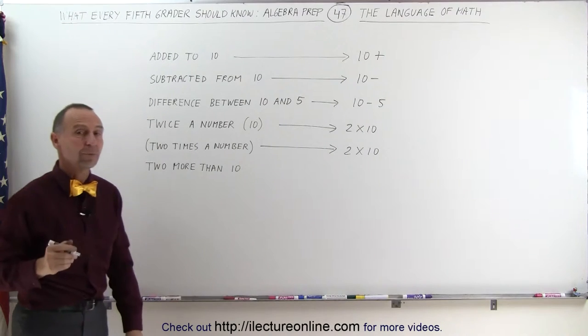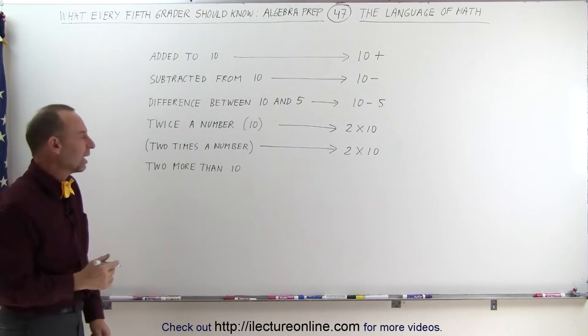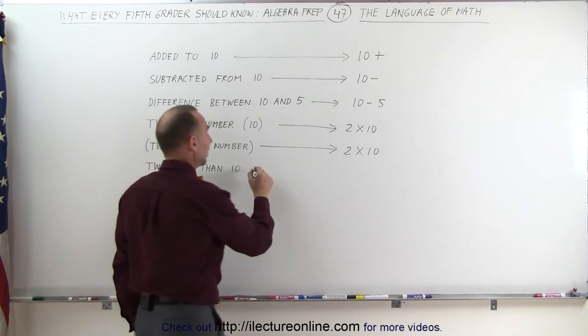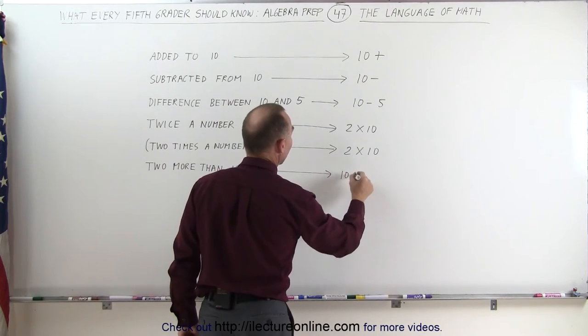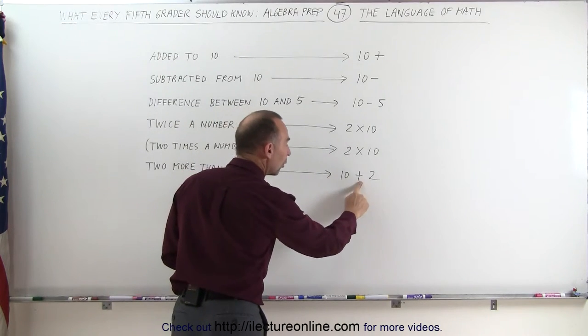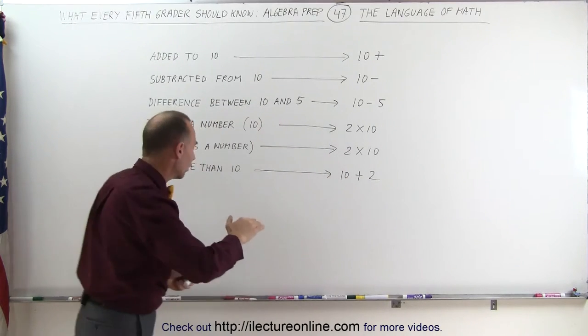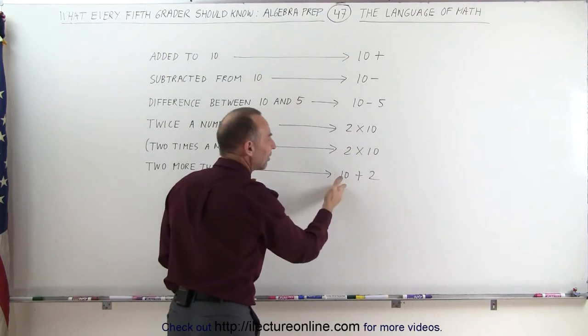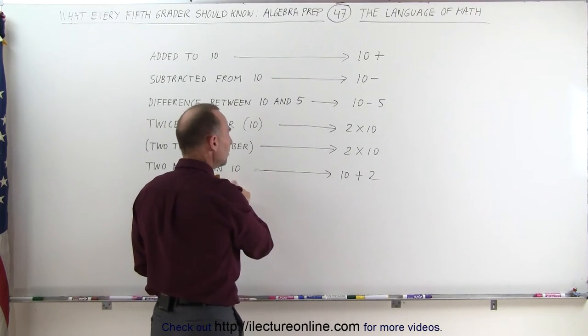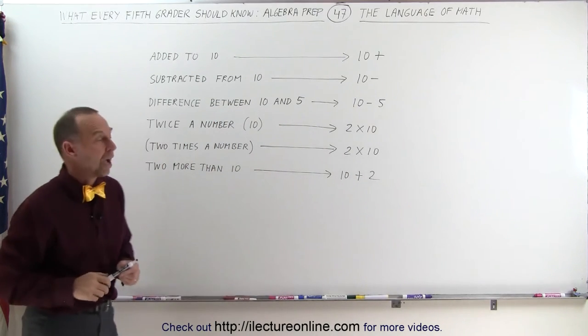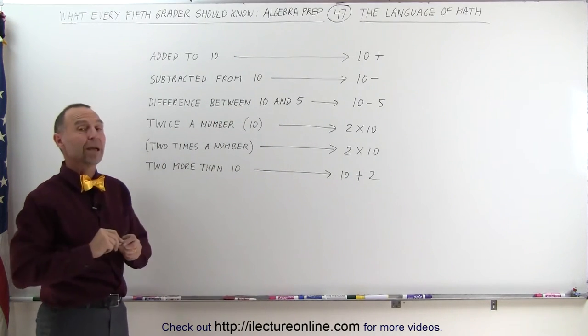Finally, sometimes you'll see the expression two more than something else. In this case, two more than 10, the way you write that is you write the number 10 and then add plus 2. This means two more than 10. So even though the language goes from left to right, the way we tend to write it is from right to left. Two more than 10 means 10, and then you add two more to that. That's how we interpret the language of mathematics.